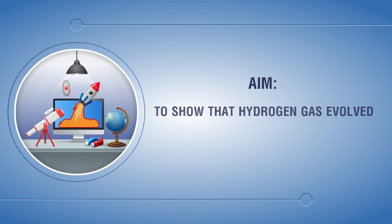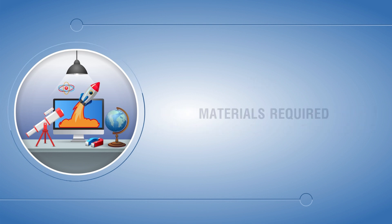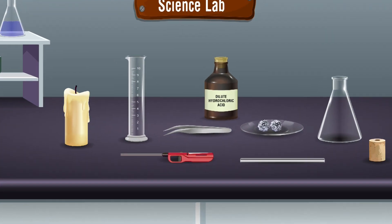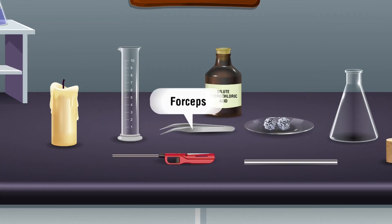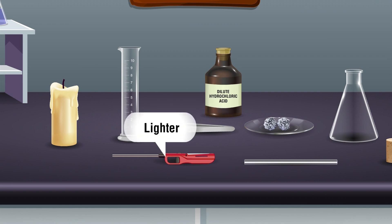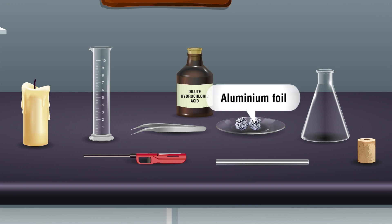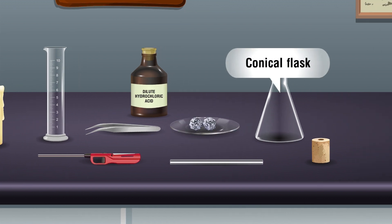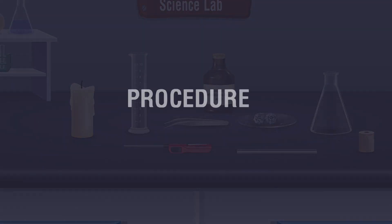Aim: to show that hydrogen gas evolved by the action of acids on some metals. Materials required: candle, measuring cylinder, forceps, lighter, dilute hydrochloric acid, aluminium foil, glass tube, conical flask, rubber cork. Procedure: